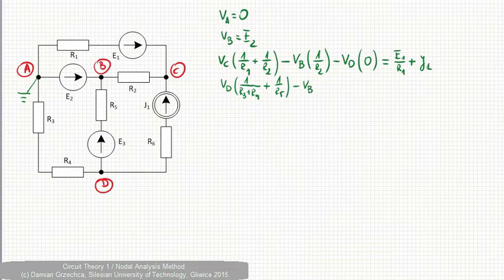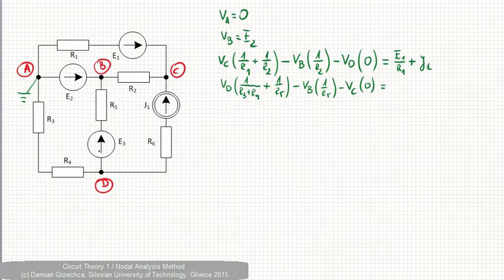minus VB times 1 over R5. Between B and D is R5 minus the potential of the C node times zero. On the right hand side, there is a voltage source, but the direction is out of node D. It is minus E3 over R5 and the current source minus J1.